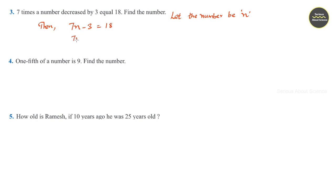Or it can be written as 7N is equal to, taking minus 3 to RHS, it becomes 18 plus 3 or equal to 21. Or I can write N is equal to 21 divided by 7. Answer is 3. Therefore, the required number is 3.